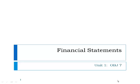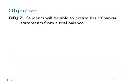Welcome to Objective 7 in Unit 1 in Accounting 3310. In this unit we're going to finalize the accounting information system cycle by looking at financial statements. Our objective here is to see how financial statements are created from the information in a trial balance.